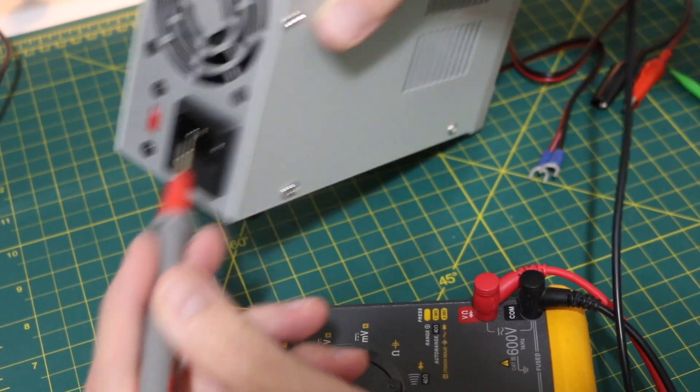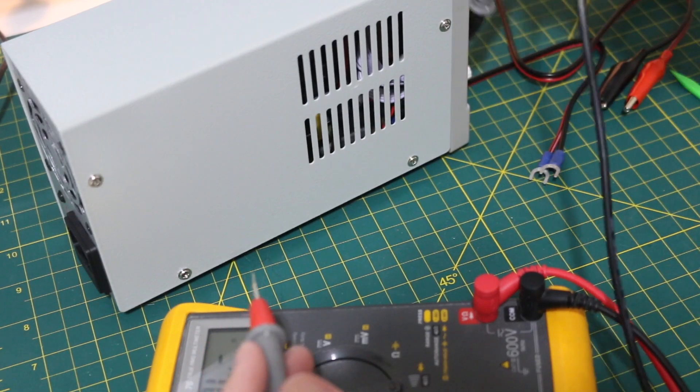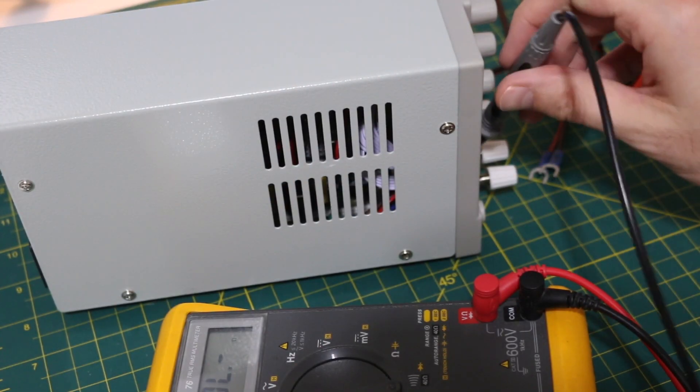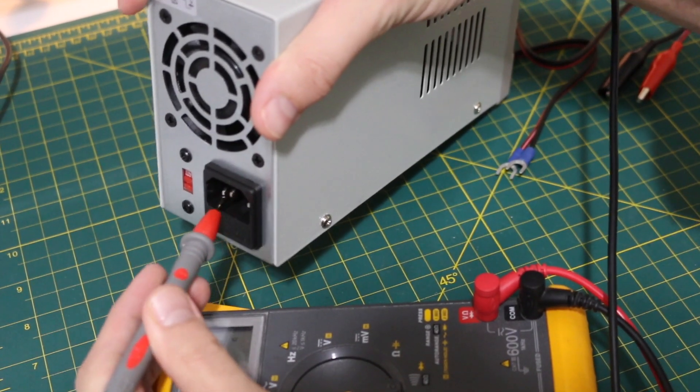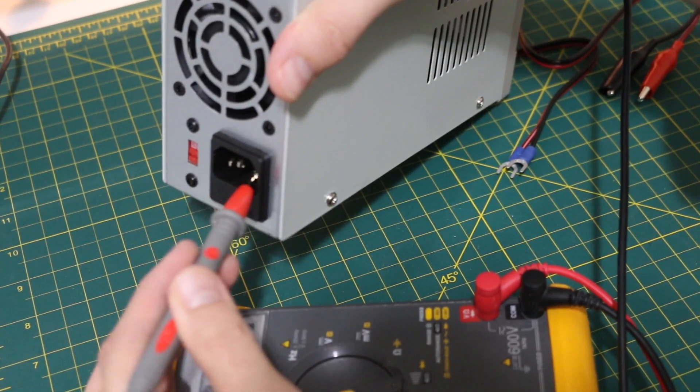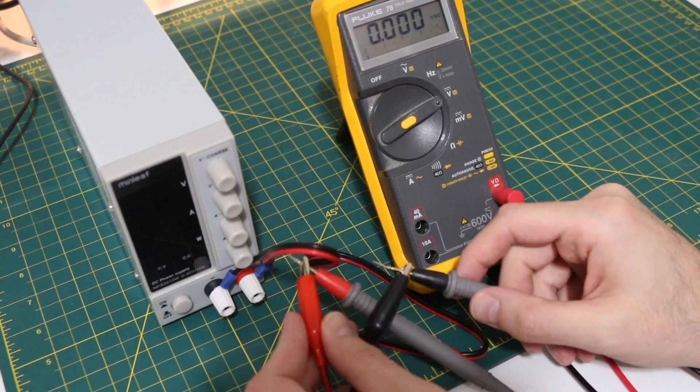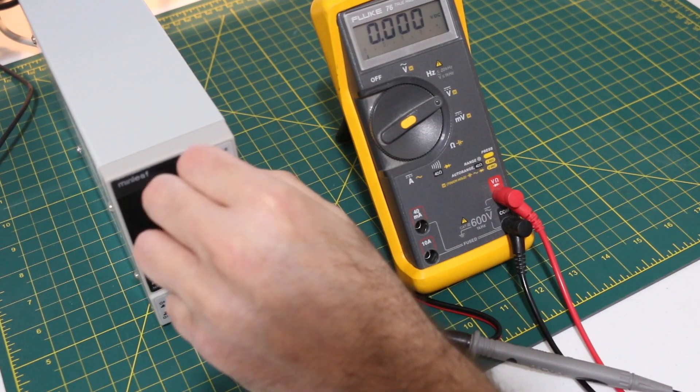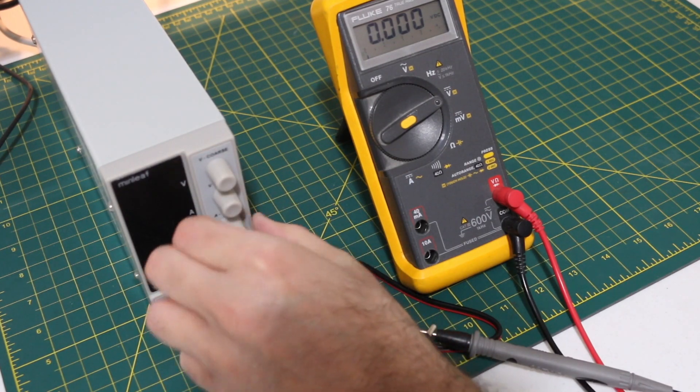Just to make sure we don't have some positive ground system, likewise the positive output is not connected anywhere. First things first, a voltmeter right on these test leads.